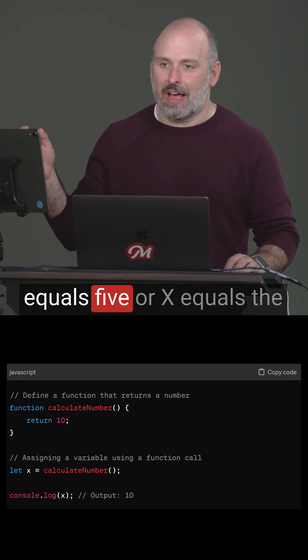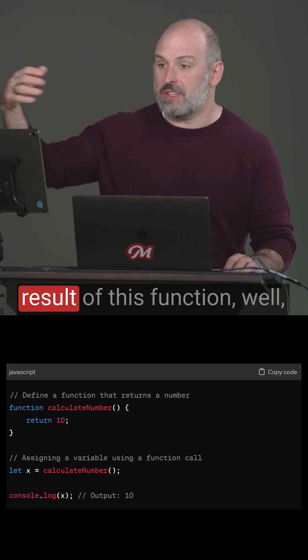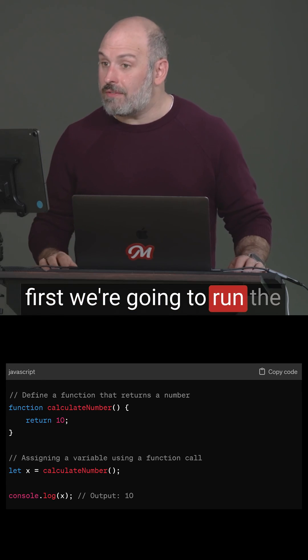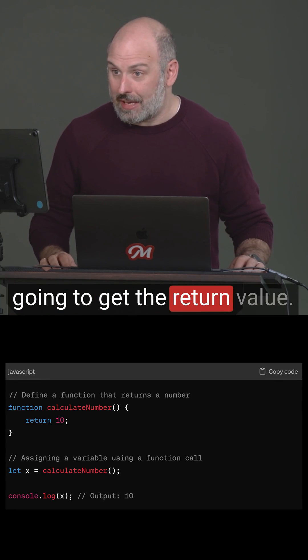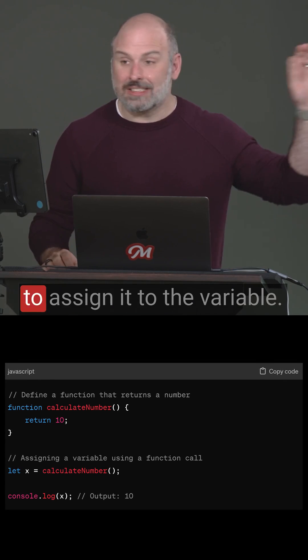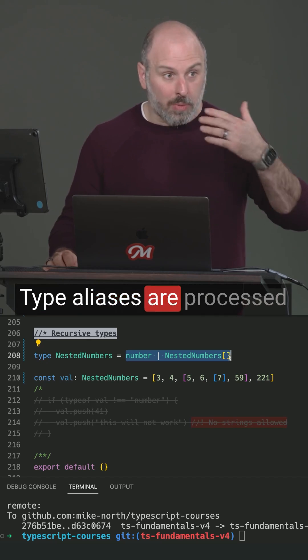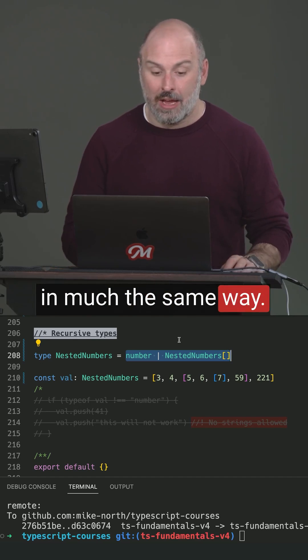if you say x equals five or x equals the result of this function, well, first we're going to run the function and then we're going to get the return value. And then finally, we're going to assign it to the variable. Type aliases are processed in much the same way.